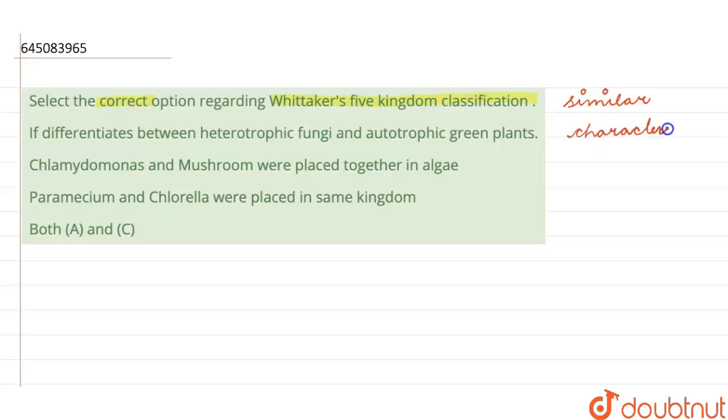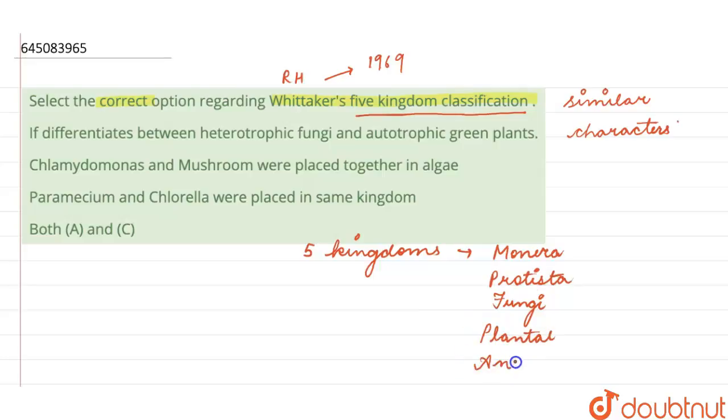One such classification was given by R.H. Whittaker in 1969, which was the five kingdom classification. He divided different organisms into five kingdoms which were Monera, Protista, Fungi, Plantae, and Animalia.